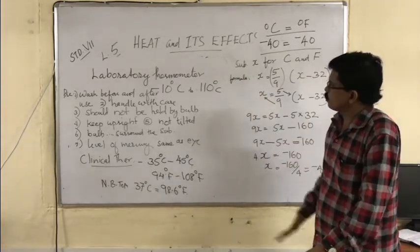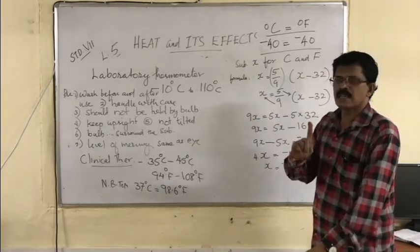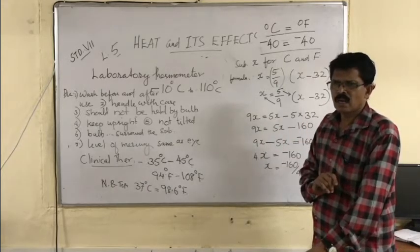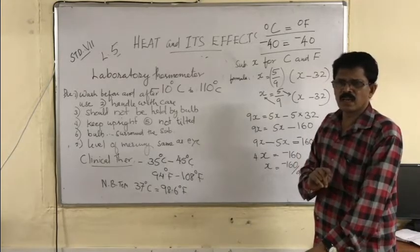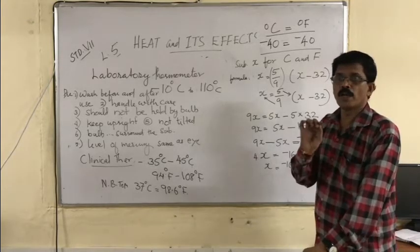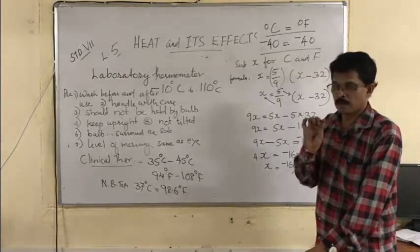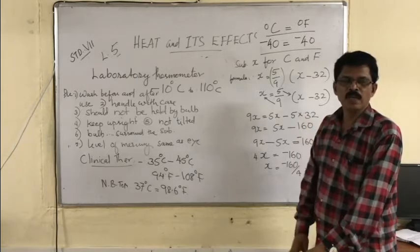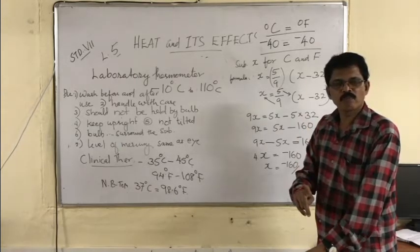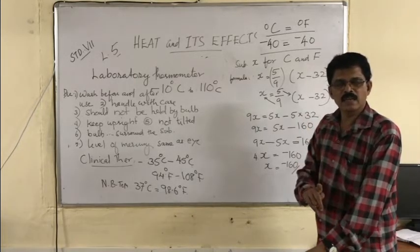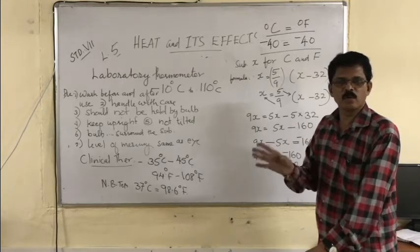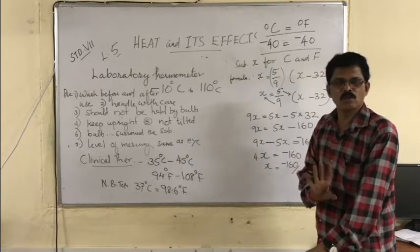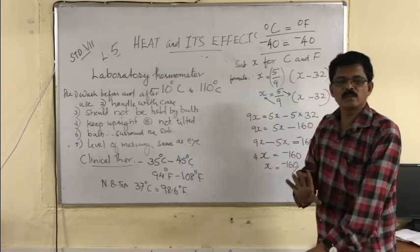Now, in degree Celsius and degree Fahrenheit, there is a point on the thermometer which comes equal, that is minus 40. It means minus 40 in Celsius scale is equal to minus 40 in Fahrenheit. Both are coming same. That is the only point at which both degree Celsius and degree Fahrenheit come same.